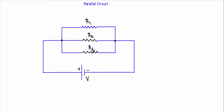Therefore R1, R2, and R3 are connected in parallel. Now let's say I have connected these parallel resistances across a voltage source V. You will see the same voltage will be applied across R3, across R2, and across R1, because V is the voltage difference across the terminals. Therefore in a parallel circuit, the voltage across the resistances will be the same.